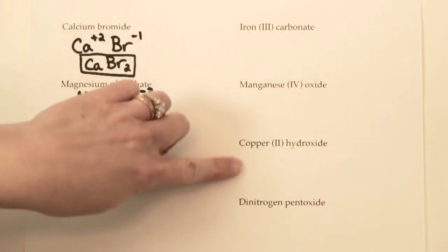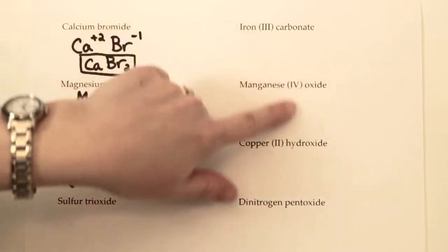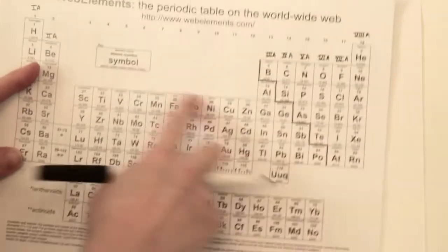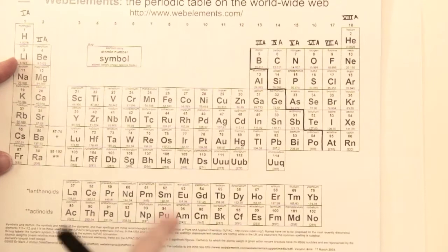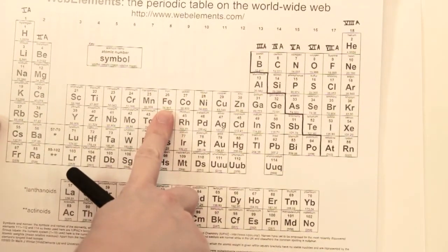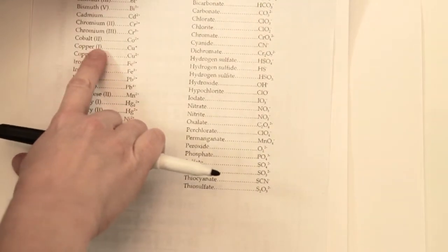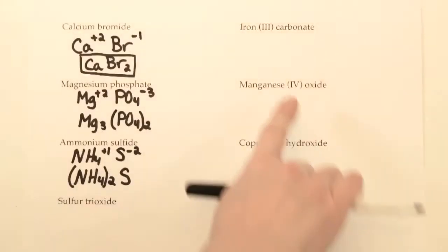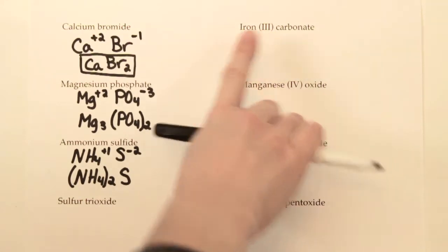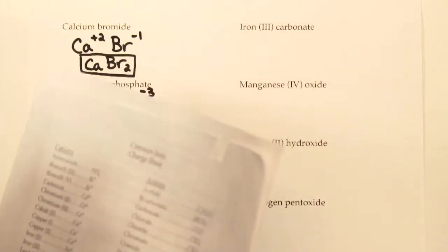The next examples include Roman numerals. Roman numerals are used for elements in the middle of the periodic table — transition metals — because they can change charges depending on what they're combining with. For example, iron could have a charge of +2 or +3, and copper could be +1 or +2. The Roman numeral tells you which form you have, and they're all listed on your charge sheet.